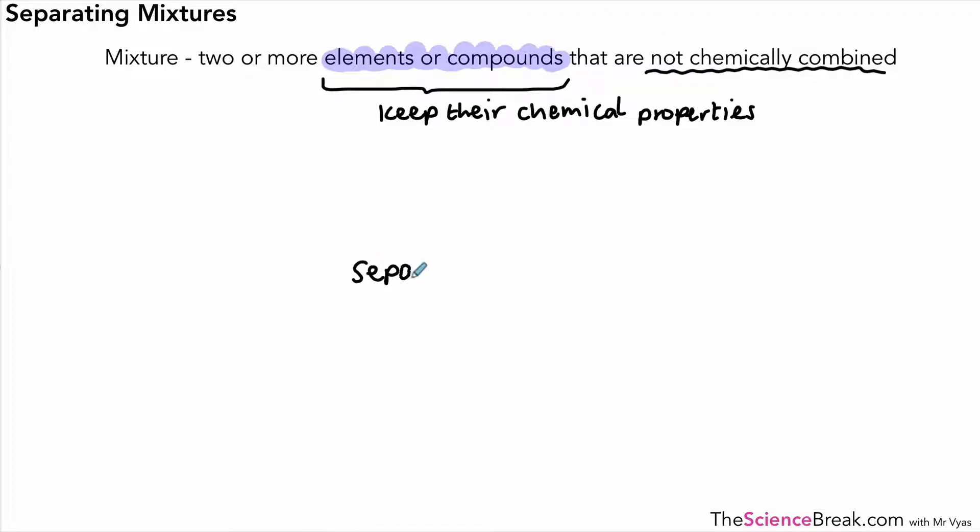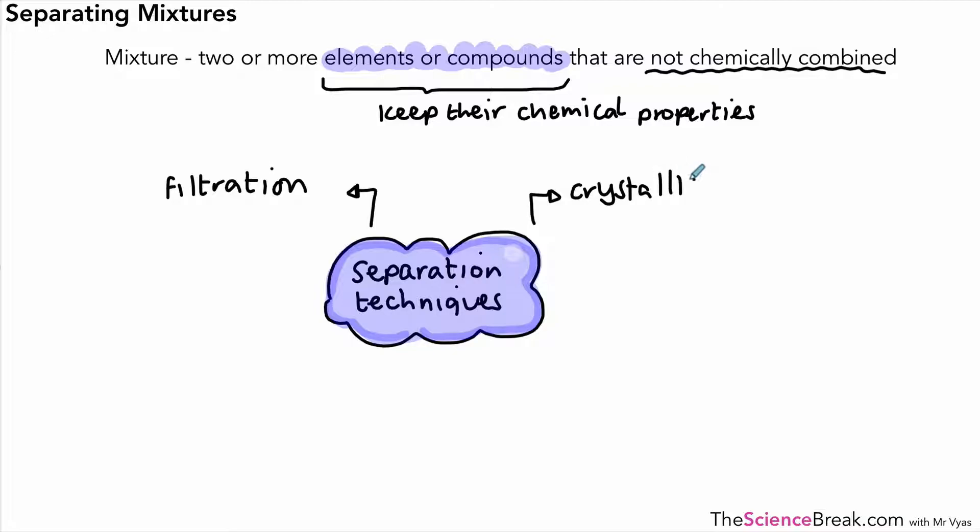We are going to look at ways in which we can separate out the parts of mixtures. There's a few techniques we're going to look at over the next couple of videos. The first one is filtration. The second one is crystallization, sometimes referred to as evaporation. We've got something called distillation, and one type of distillation is fractional distillation.